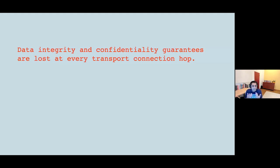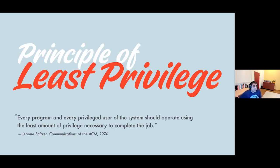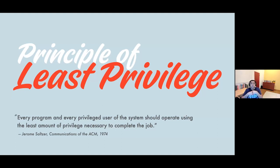TLS is increasingly less useful in these types of data flows because it violates the principle of least privilege. A message broker whose job is to route messages between producers and consumers shouldn't get to see or potentially manipulate the data in those messages if the broker is compromised. The same applies to LoRaWAN gateways or edge computing devices — these network intermediaries shouldn't be able to manipulate data not intended for them. Our applications should have end-to-end security and privacy guarantees.